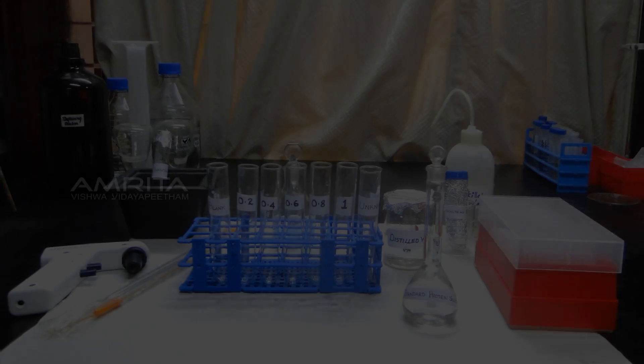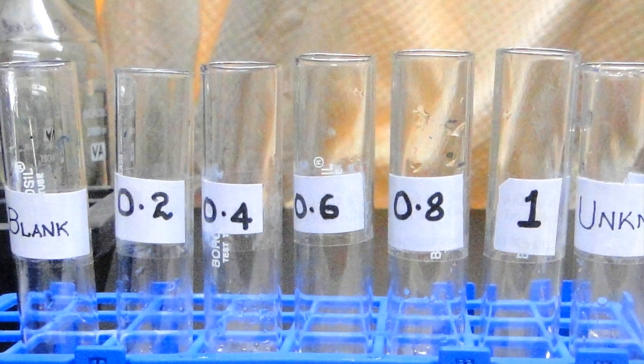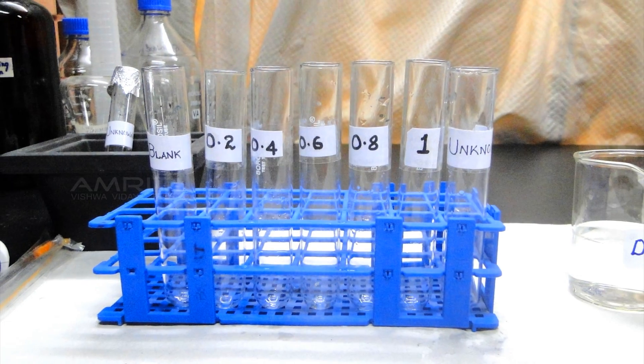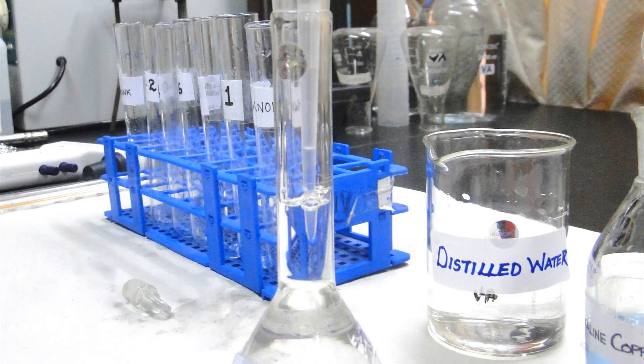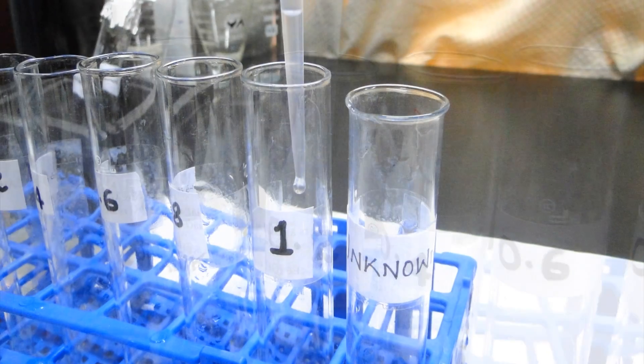Procedure: Arrange the reagent solutions prepared on the table. Label the test tubes with the volume taken and arrange them in a test tube rack. Pipette out the standard protein solution from the standard flask into the test tubes labeled 0.2ml to 1ml.